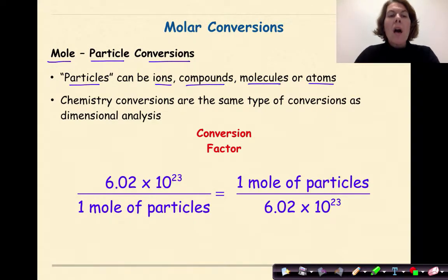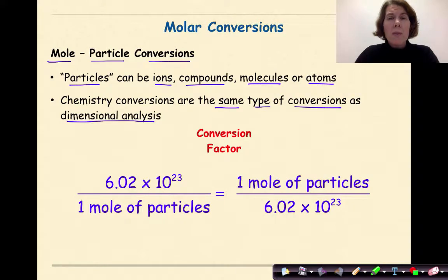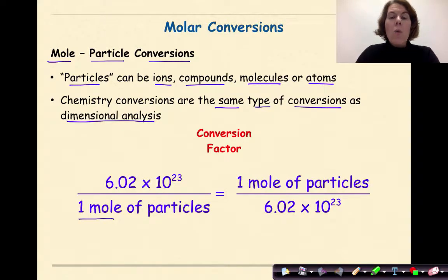Chemistry conversions are the same type of conversions as in dimensional analysis, which at this point you should be quite familiar with. The conversion factor we're going to use is the idea that 6.02 times 10 to the 23rd particles is equal to 1 mole of particles, or 1 mole of particles is equal to 6.02 times 10 to the 23rd particles.